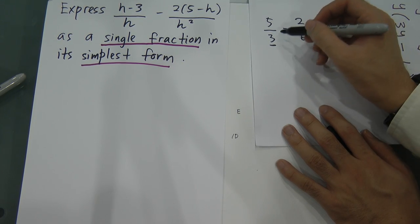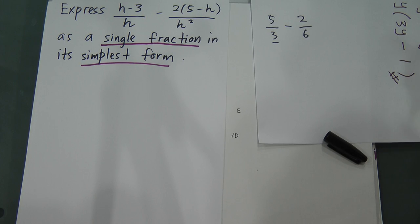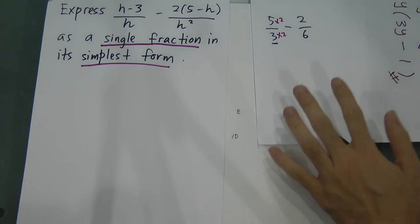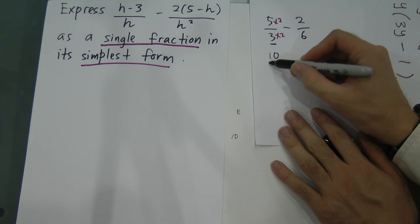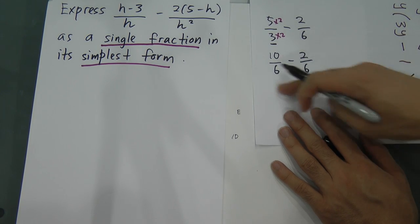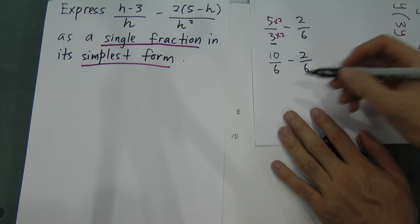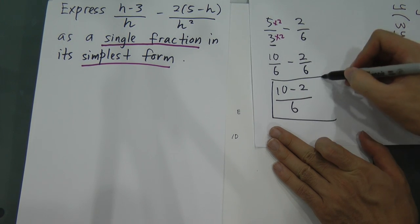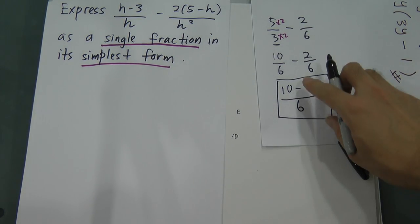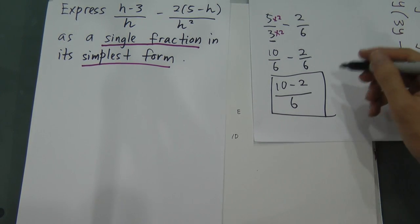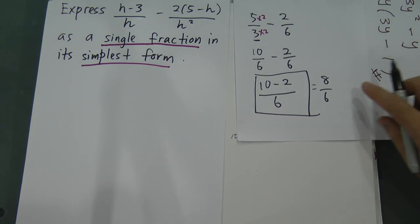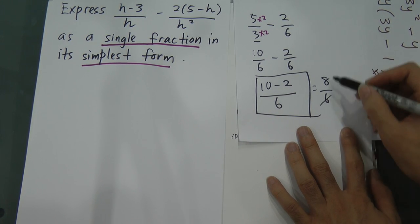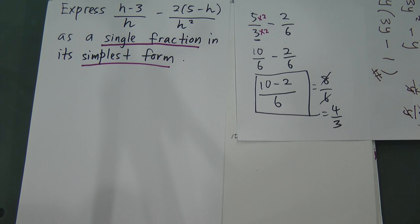Since 3 and 6 are not the same, we cannot subtract straight away. We have to multiply 2 on top and bottom to make 3 become 6. So we get 10 over 6 minus 2 over 6, which becomes the single fraction (10 minus 2) over 6 — that gives us 8 over 6. To get the simplest form, we simplify to 4 over 3.